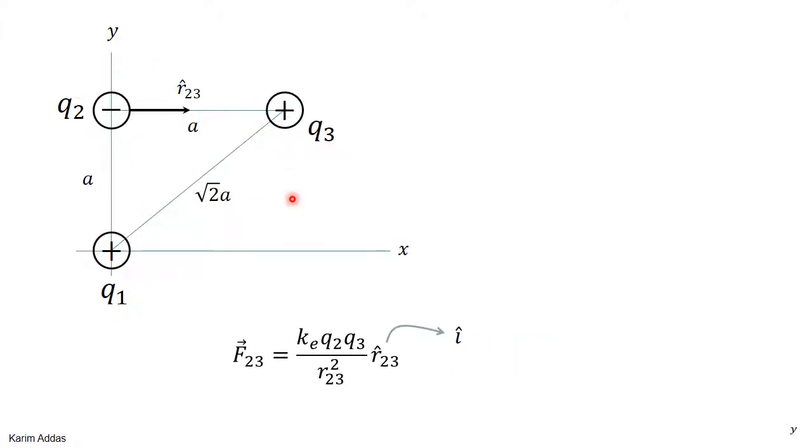You should see that the R hat 2,3 vector is just pointing along the x direction, so it's just i hat, so it's very simple. So now the charge Q2 is negative, the charge Q3 is positive, and so let's substitute all the values that we know for this equation, but without putting numbers in, just in terms of symbols.